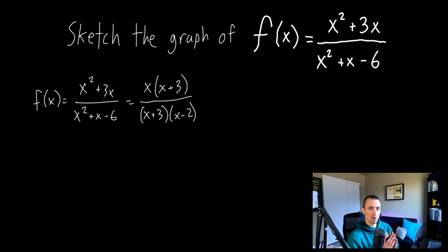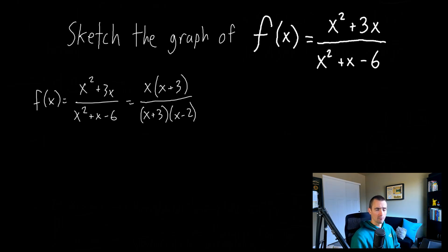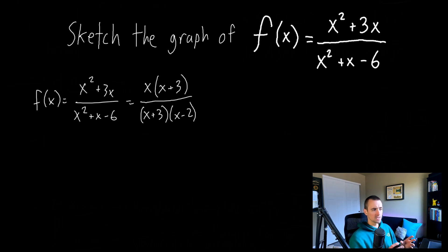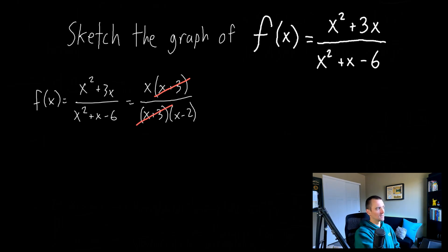This is where the common factors reveal themselves. Once you factor the numerator and denominator of your fraction, you want to look and see if they have any factors in common. We can see here we have (x + 3) appearing both on the top and the bottom of this fraction. So if you think about what this function simplifies down to, those two factors would actually cancel out with each other. We would be able to say that (x + 3) on the numerator and (x + 3) on the denominator cancel out. So basically this function is equivalent to whatever is left over: x over (x - 2).